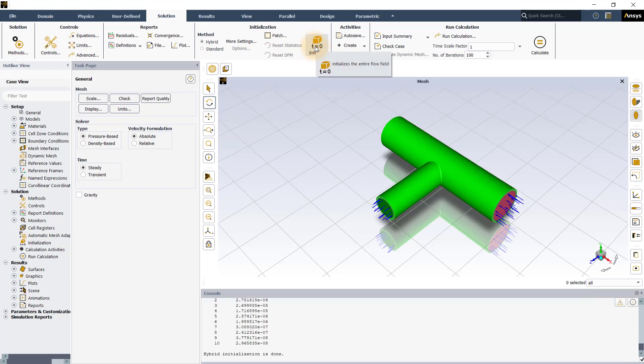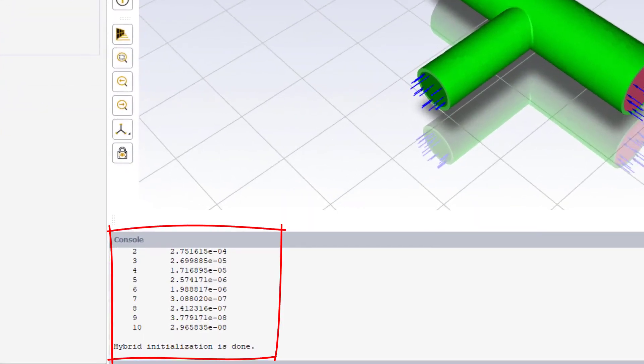When the initialize button is clicked, the solver initializes the solution after solving the Laplace equation for 10 iterations to set up the pressure and velocity fields. The residuals of the solution for these 10 iterations are printed in the console window.